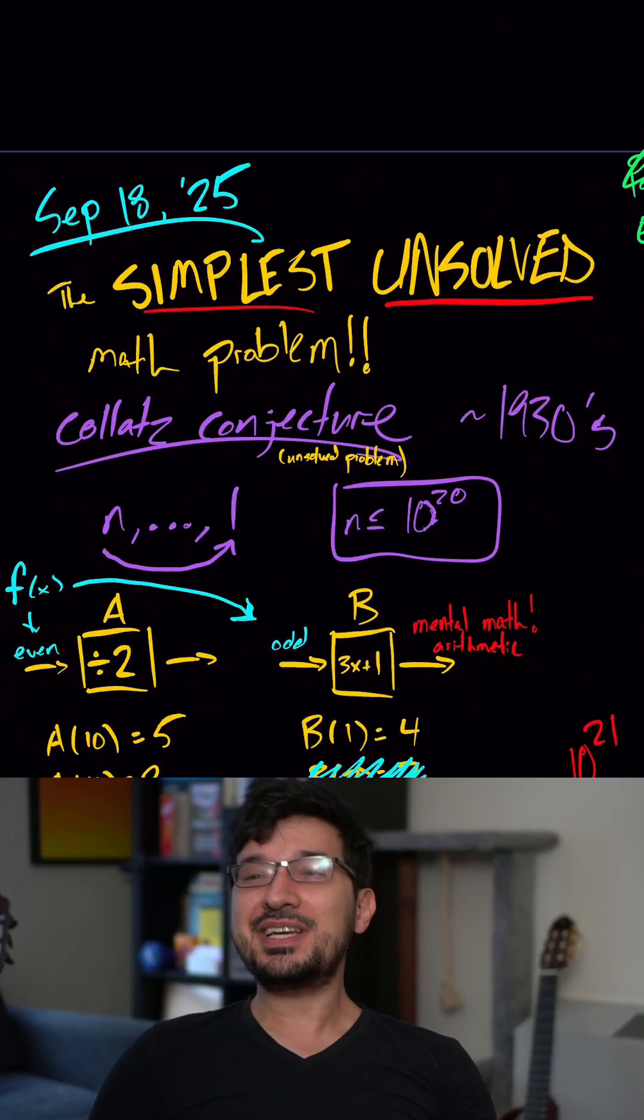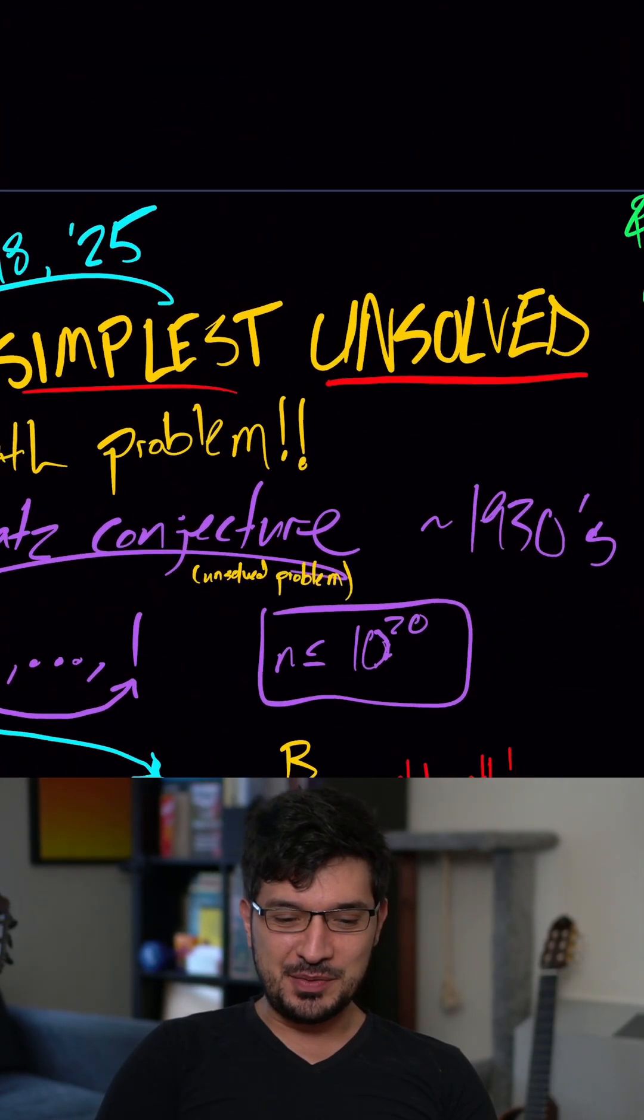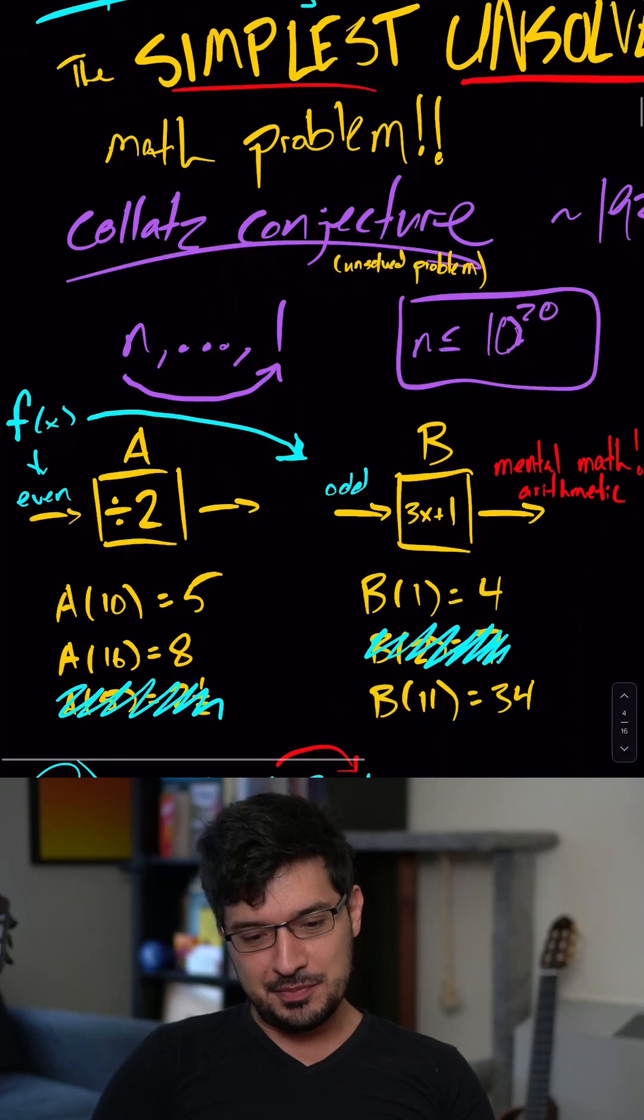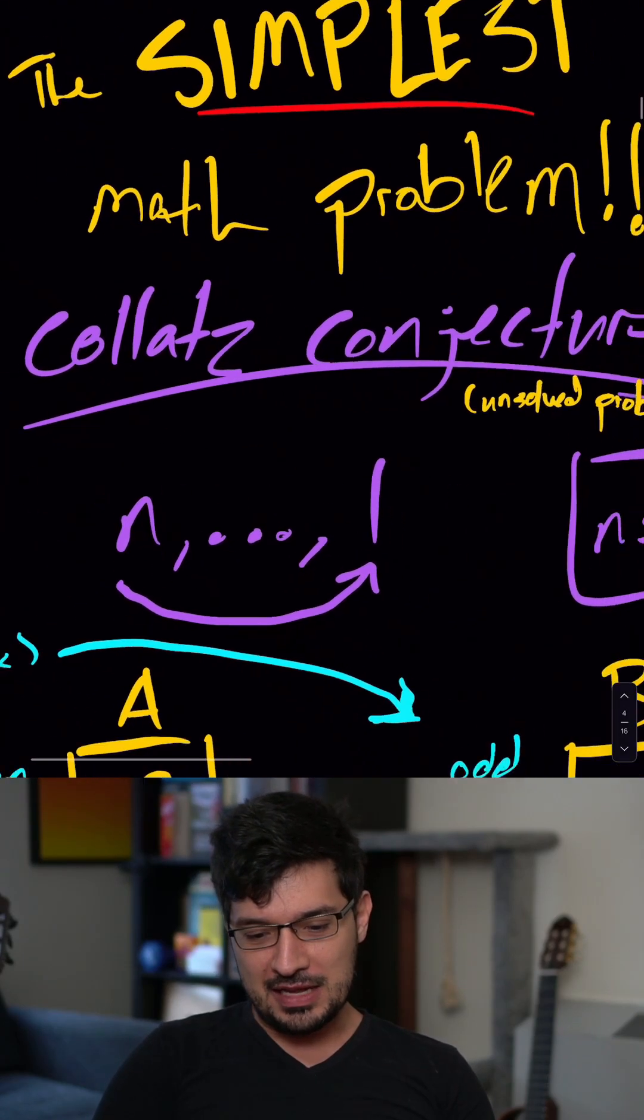Okay, so this is what we got done on stream a couple days ago. We worked on the simplest unsolved math problem. This is the Collatz conjecture.